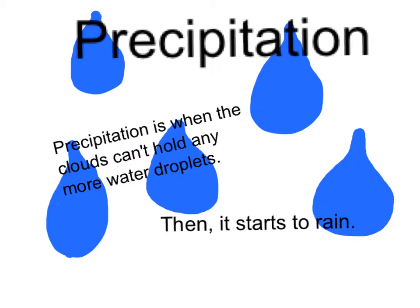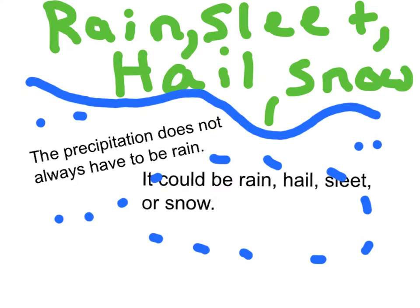Precipitation is when the clouds can't hold any more water droplets. Then it starts to rain. Precipitation does not always have to be rain — it could be rain, sleet, hail, or snow.